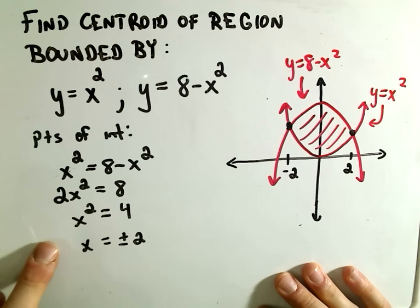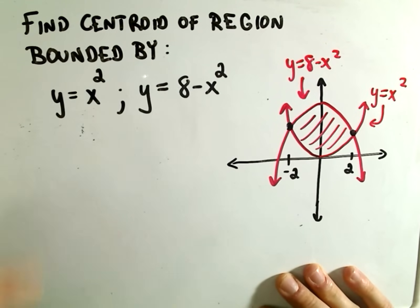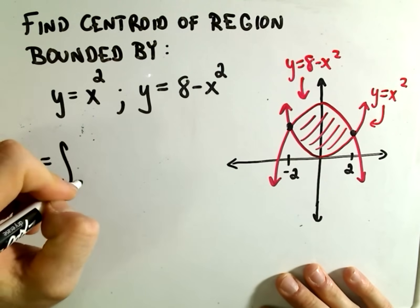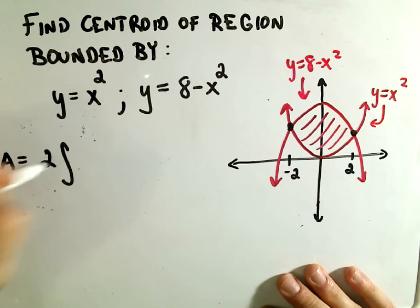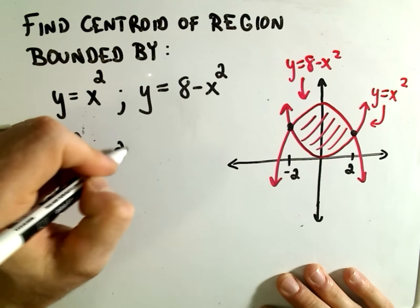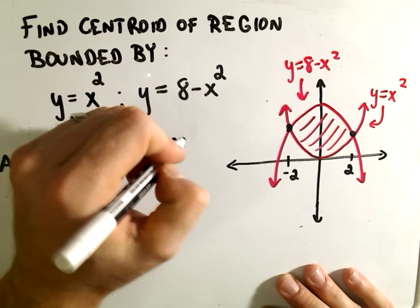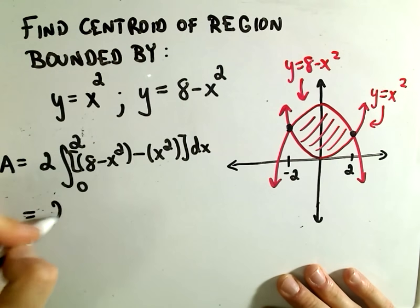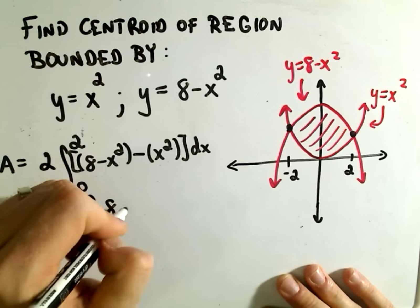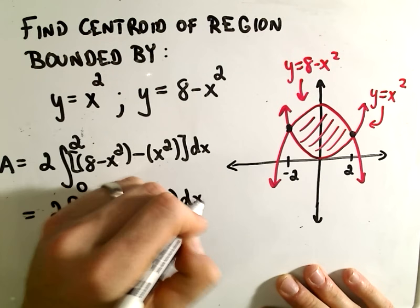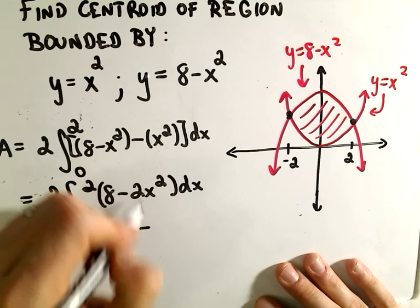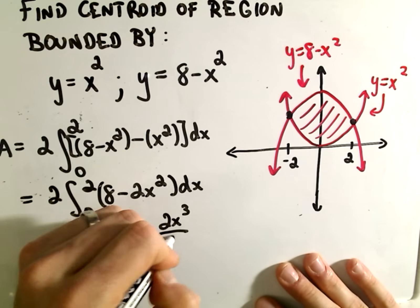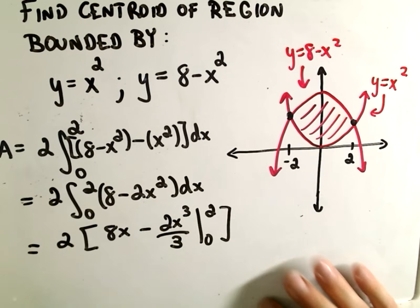From here we can calculate the area between the two curves. The area is going to be an integral, and since it's symmetric, instead of going from negative 2 to 2, I'm going to take 2 times the integral from 0 to 2 to make the computations a little easier. We take the top function minus the bottom function. If we expand the parentheses we get 8 minus 2x squared dx, and when we integrate that we get 2 times the quantity 8x minus 2x cubed over 3, evaluated from 0 to 2.